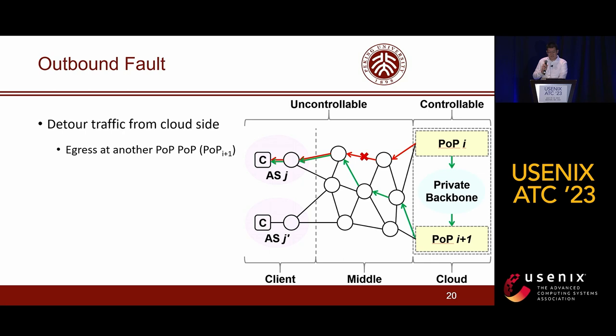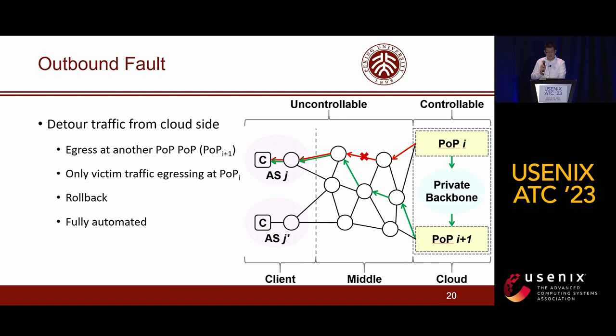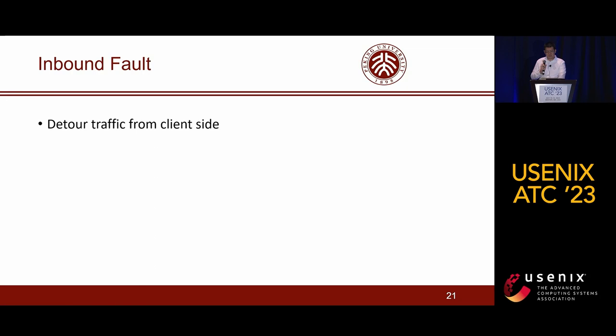As the detouring is from the cloud side, we can detour only the victim traffic from egressing at POPi to egressing at POPi+1, by updating BGP routes associated with the IP prefix in the victim AS. Once the victim AS stops suffering from the fault continuously for 10 minutes, the detouring subsystem will withdraw the corresponding BGP routes so as to detour the victim traffic back. Currently, the traffic detouring for outbound faults has already been fully automated.